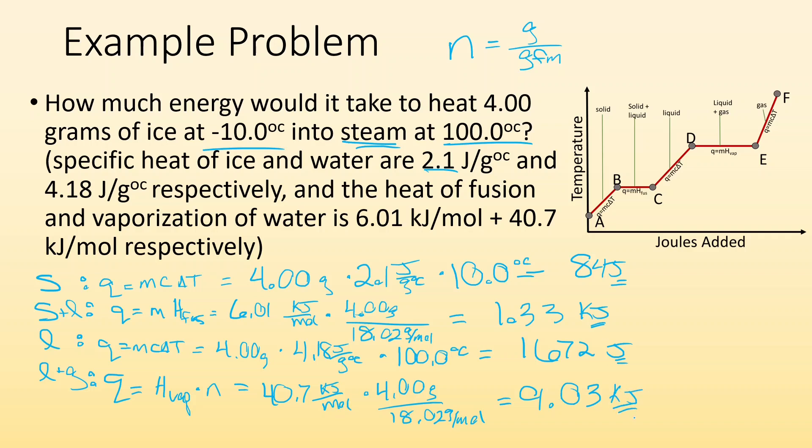All right. So I got kilojoules. I got joules. I got to fix this. I got to turn one to the other. I'm going to end up with, I'm going to go for kilojoules. I want things in kilojoules. So 84 joules divided by 1,000 gives me 0.084 kilojoules. 1.33 kilojoules is fine because it's kilojoules. 1672 joules divided by 1,000. I end up with 1.672 kilojoules. And my last one is already in kilojoules. So now I've got everything in kilojoules. I add them all together and I get 12.116 kilojoules, roughly, not accounting for sig figs.